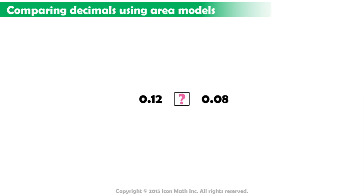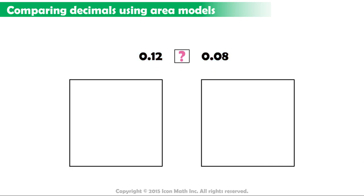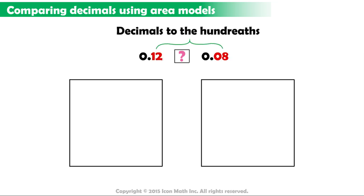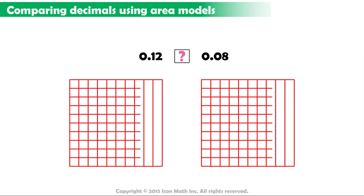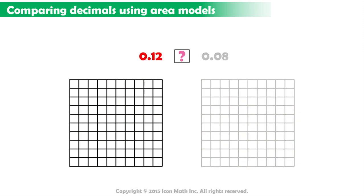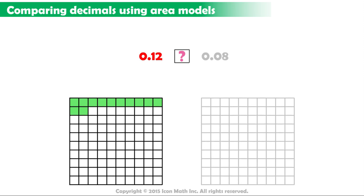To do that, we start by representing each number using area models. Notice that both numbers have decimals to the hundredths. This means we should divide each area model into one hundred equal parts. For the first decimal number, twelve hundredths, we will shade twelve small parts because the number twelve hundredths represents twelve parts out of a total of one hundred.